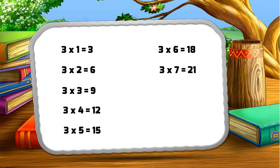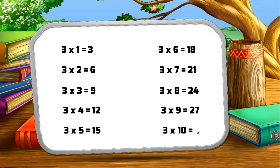Three seven za twenty-one, three eight za twenty-four, three nine za twenty-seven, three ten za thirty.